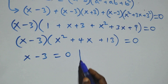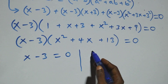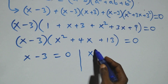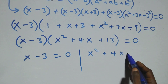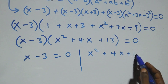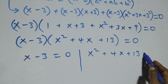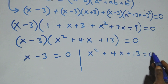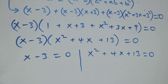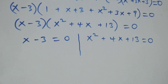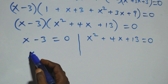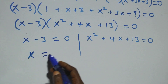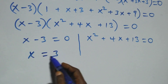So we have (x minus 3)(x squared plus 4x plus 13) equals to 0 here. Then we have 2 possible cases: the first one is x minus 3 equals to 0, or we have x squared plus 4x plus 13 equals to 0 here. Solving the first case we have x equals to 3, which is a real solution here.